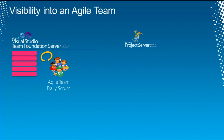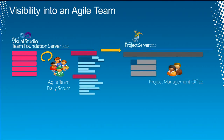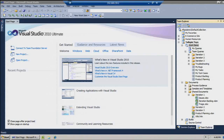Let's get started with demo time. Just to set the stage: we've got two offices — our development office and our project management office. The development team wants to practice Scrum, one of many Agile methodologies. The project management office wants visibility into what the Agile development teams are doing. I'm going to be the development lead Peter, and Christophe is going to be our project manager Lena, and we'll go back and forth showing each other our different information.